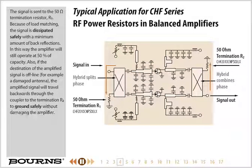The signal is sent to the 50-ohm termination resistor, R1. Because of load matching, the signal is dissipated safely with a minimum amount of back reflections. In this way, the amplifier will still operate at 50% of capacity. Also, if the destination of the amplified signal is offline — for example, a damaged antenna — the amplified signal will travel backwards through the coupler to the termination, R2, to ground safely, without damaging the amplifier.